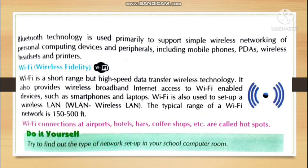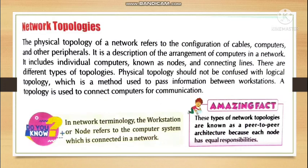If you go beyond the Wi-Fi range, signals will become weaker. There are devices on the market that can amplify signals and increase range. Wi-Fi is a short-range but high-speed data transfer technology. It provides wireless broadband internet access to Wi-Fi-enabled devices like smartphones and laptops, and is used to set up a wireless LAN (WLAN). The typical range is up to 150 to 500 feet. You'll find Wi-Fi hotspots at hotels, restaurants, airports, and railway stations.